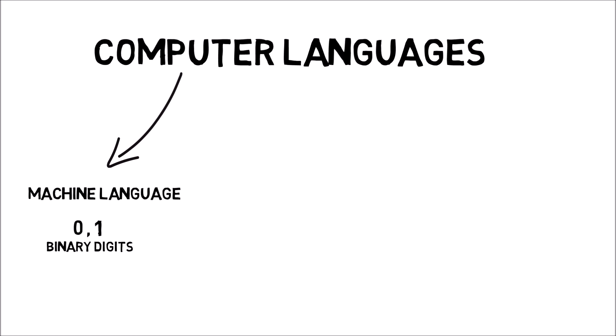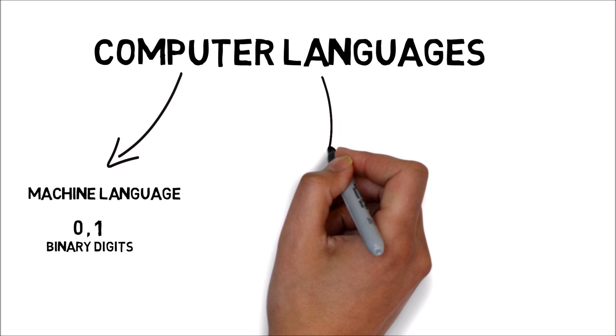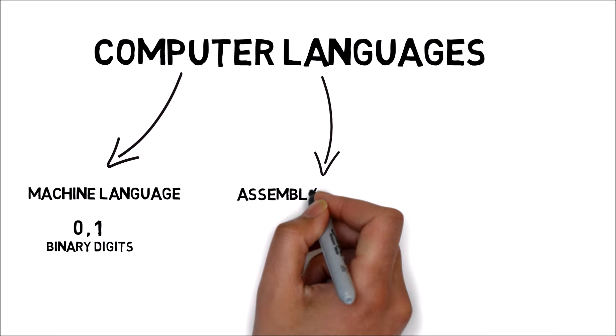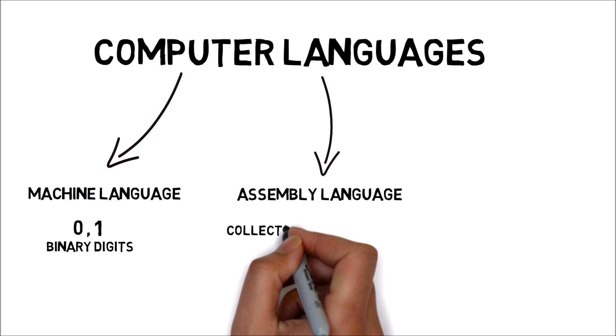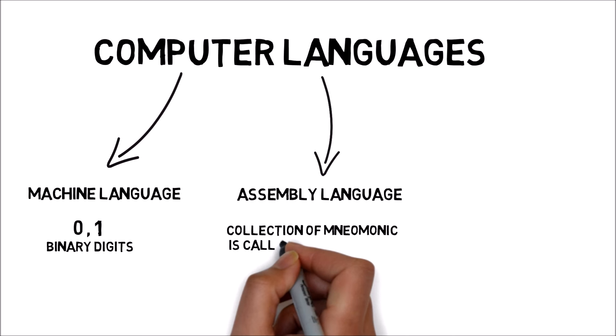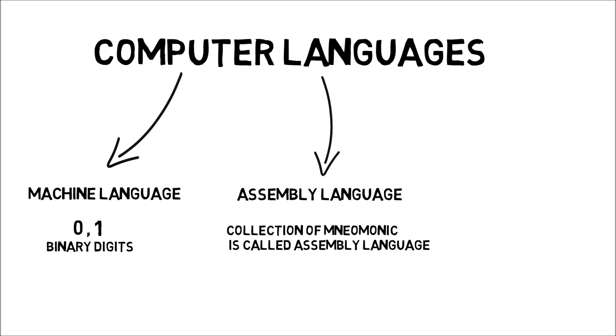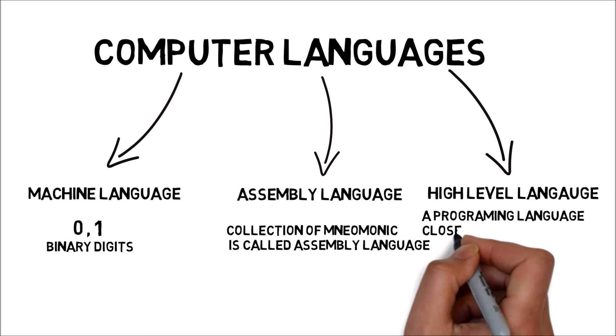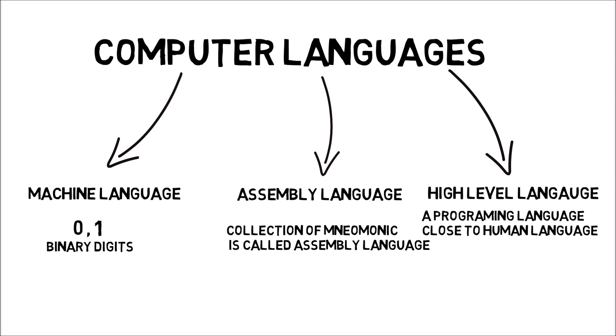In terms of computer languages, we have 3 types. Let me tell you about machine language, which is 0 and 1. Since machine language is a little tough, we have developed a new language called assembly language. Assembly language is a symbolic language made by codes, and then comes the computer instruction. Next is high-level language. High-level language means the language that is used by humans — programming language close to humans. This is called high-level language.